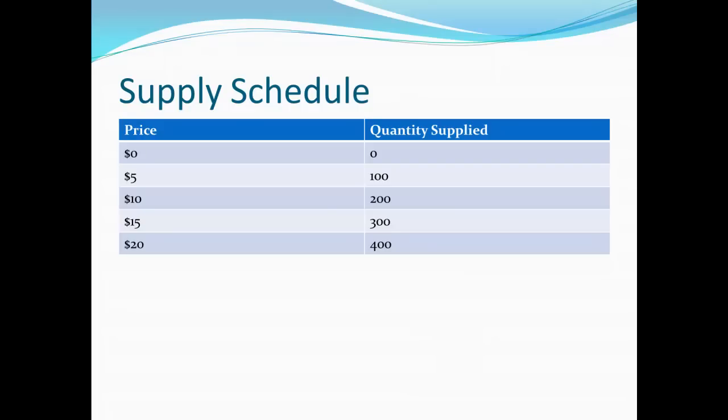So here in this case, for this good, at a price of $0, our suppliers aren't willing to provide any of the good. The quantity supplied is 0. At a price of $5, they're willing to supply 100. At $10, they're willing to provide 200 for sale. At $15, they're willing to provide 300. And at $20, they're willing to provide 400.